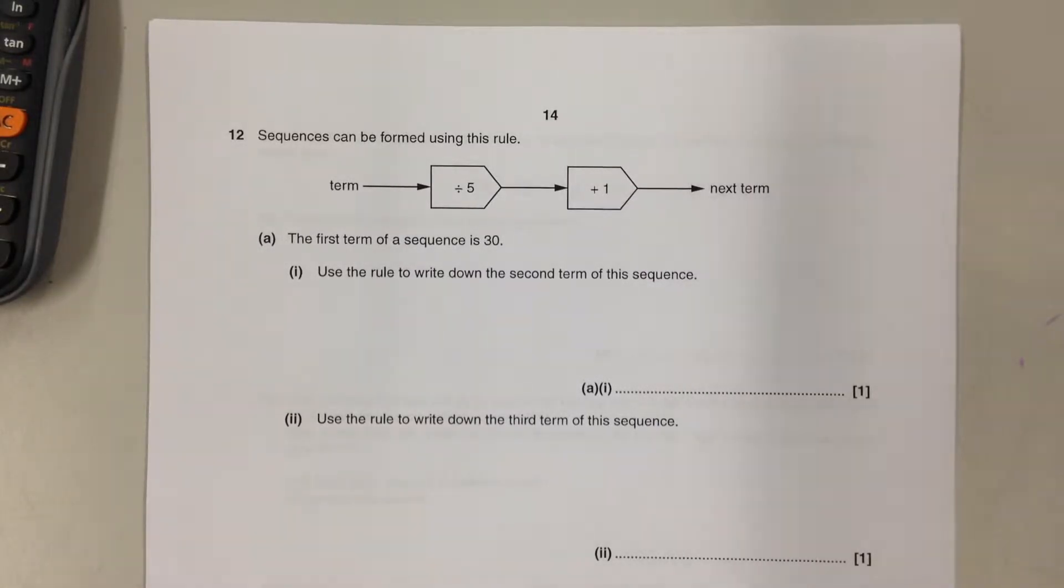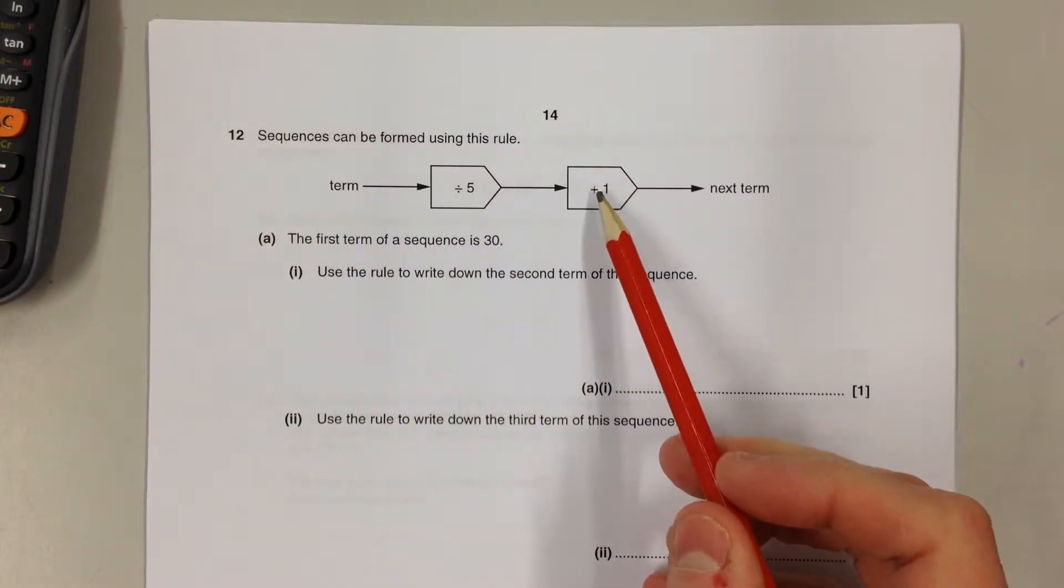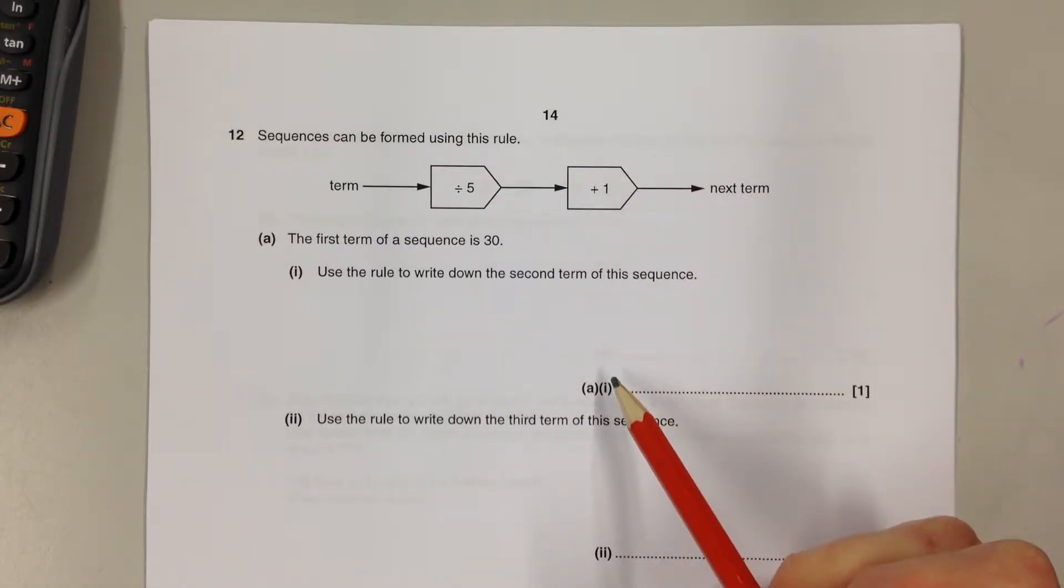Question number 12, you've got a little function machine that describes a sequence. You put a term of the sequence into this end, you divide it by 5, you add 1, and that tells you what the next term of the sequence is.